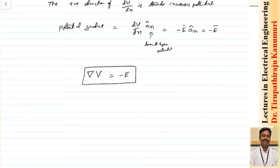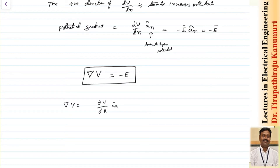We have already discussed in a previous class how to calculate the gradient of a scalar quantity using curvilinear coordinate systems in chapter number one — a link is provided above. Here I am directly writing the formula. The gradient of V in Cartesian coordinates is: ∂V/∂x in the direction of A_x, plus ∂V/∂y in the direction of A_y, plus ∂V/∂z in the direction of A_z, and this equals minus E.